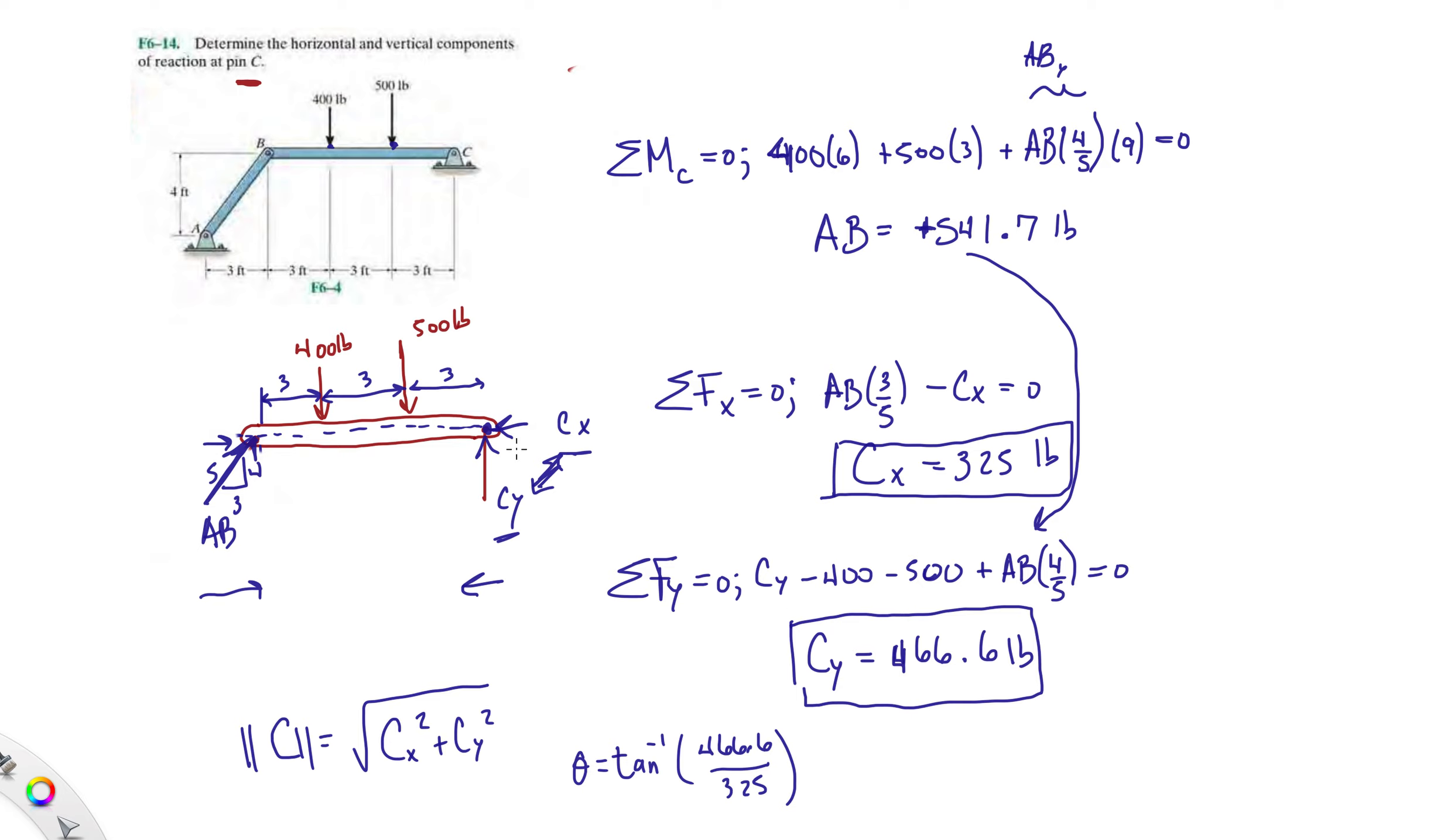The direction of C would be determined by the Y component of 466.6 over 325. If your professor wants the resultant reaction on C, then take your components, square them, add them up, take the square root to get your magnitude, then get the direction of that magnitude. We know it's pointing to the left and upwards, so your reaction might be pointing somewhere like this with some angle.